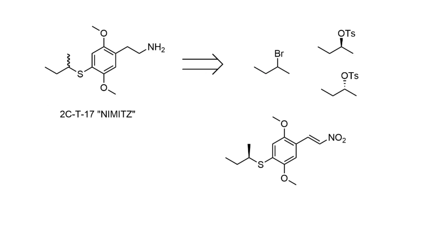For obvious reasons, 2CT17 was also known as Nimitz. Shulgin points out that this is an interesting compound because it has a chiral centre on the alkyl chain, providing information about the chiral environment the molecule might be binding in. The racemate was made first by alkylation with the bromide. Shulgin also set about synthesizing the enantiopure compounds using commercially available enantiopure alcohols, converting them to tosylates for the alkylation, and taking both as far as the nitrostyrenes — but unfortunately the project was abandoned before reduction to the final 2CT products.